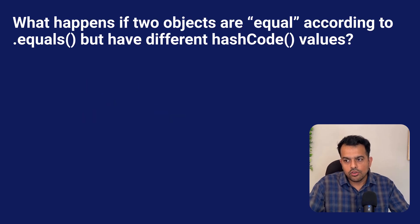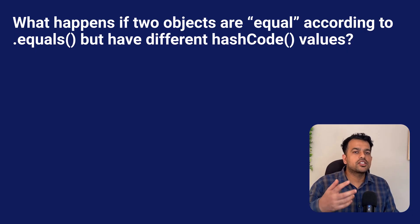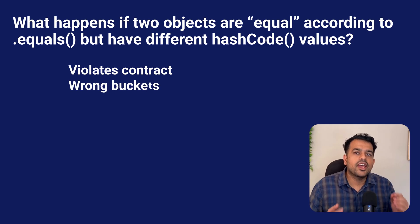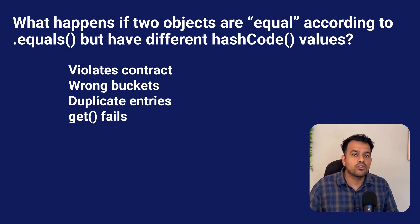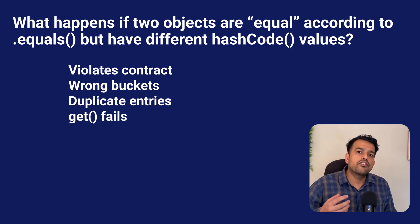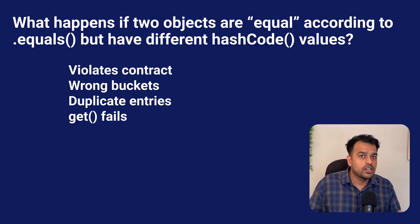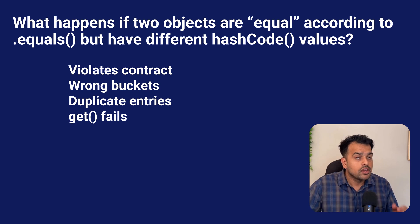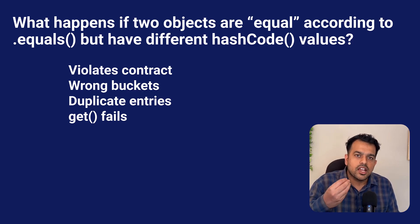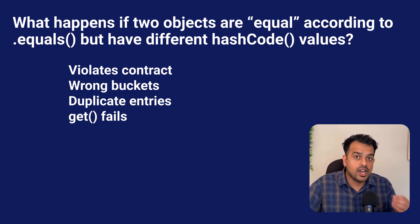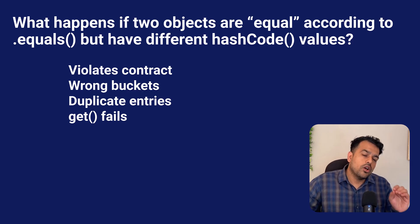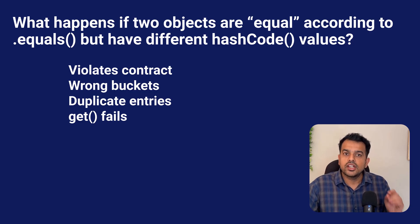The next question is: what happens if two objects are equal according to .equals() but have different hashCode() values? This is one of the biggest contract violations in Java. HashMap and HashSet depend on the rule that equal objects must have the same hash code. If .equals() says both objects are the same but hashCode() is different, they go to different buckets — HashMap will treat them as two separate objects. You might see duplicate entries or failed lookups. Even worse, the get() method might fail even when the key exists because it's looking in the wrong bucket. This kind of bug is extremely hard to debug. Always override both equals() and hashCode() together — never one without the other.